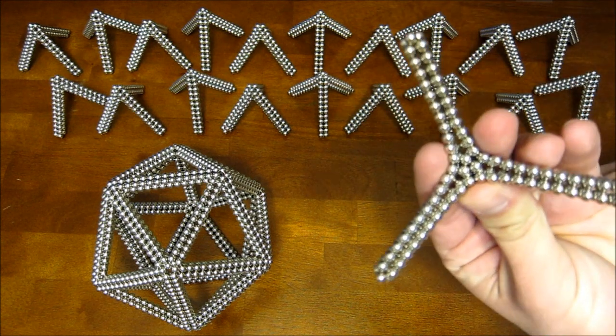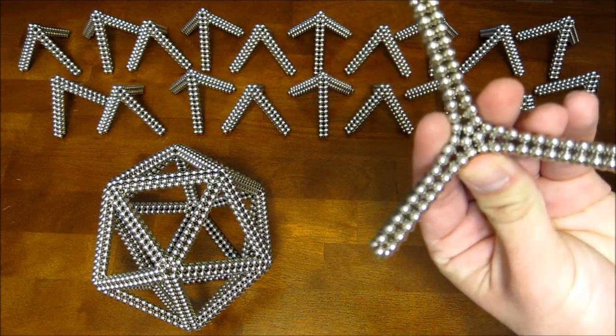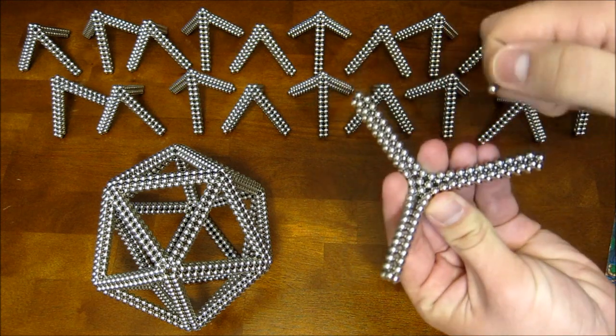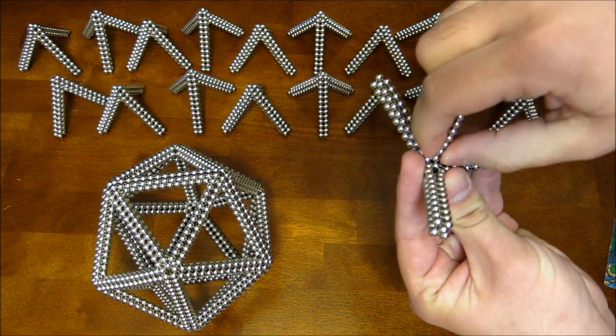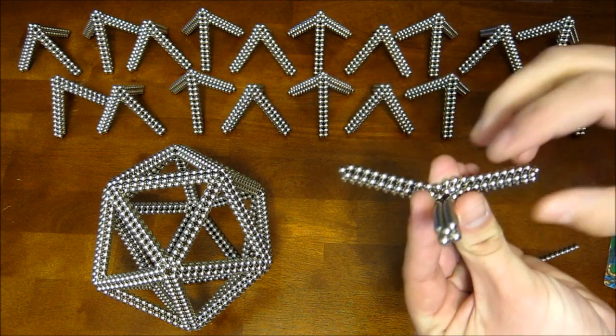Now, if you flip that around, you can see those three magnets in the center. They form a little triangle. And what you actually want to do is take a chain and remove those without disturbing the rest of them if you can.